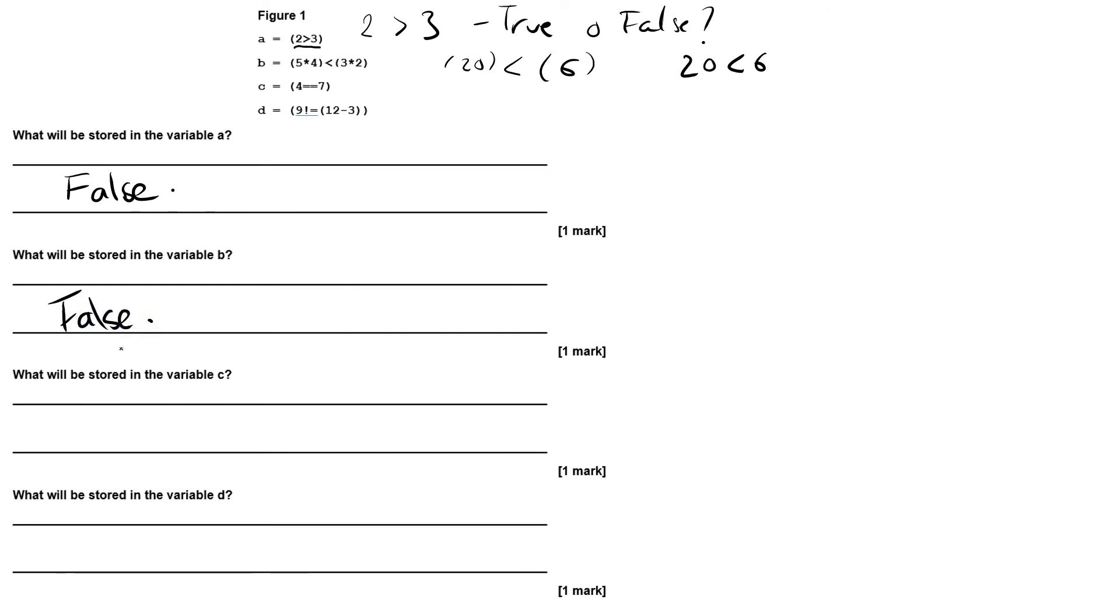Then we've got here 'what is stored in the variable c?' and we've got here four is equal to seven. Well that is quite clearly false.